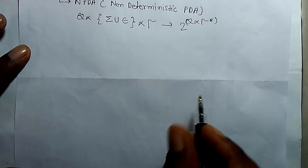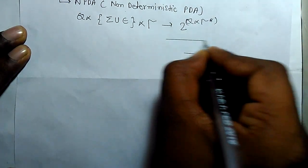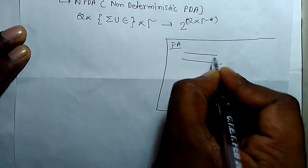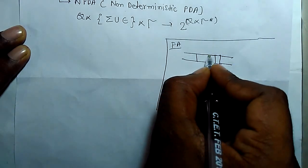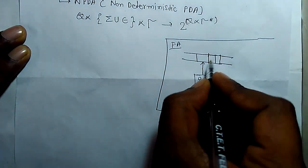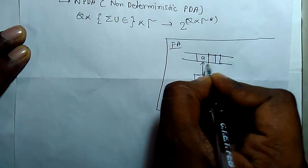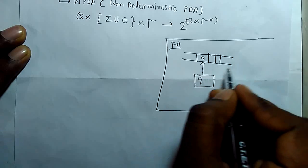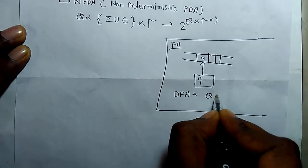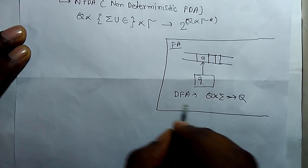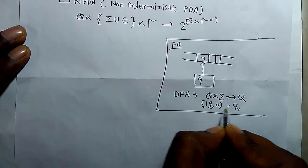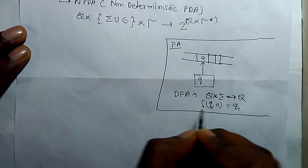In the finite automata, there was an input tape with symbols where it changed the state according to reading the inputs. For example, if it reads A then it gets a new state. For DFA, there was a transition Q cross Sigma that leads to Q. If Q is a state and A is an input symbol, then the new state you get is Q1, and Q0 is the start state.